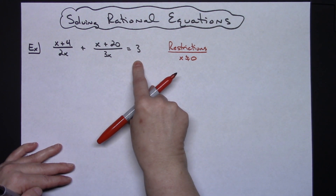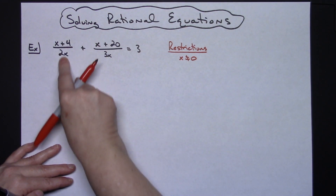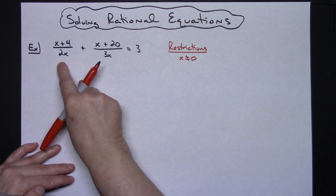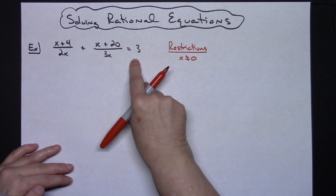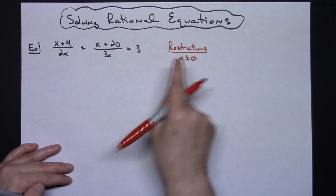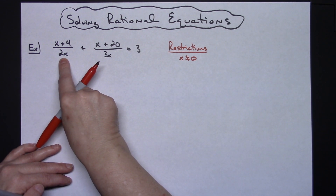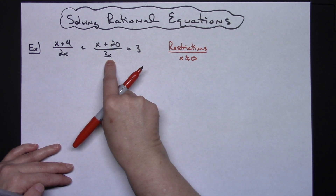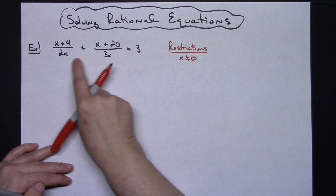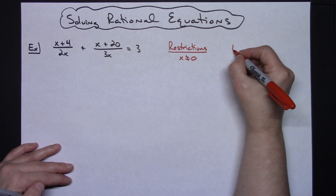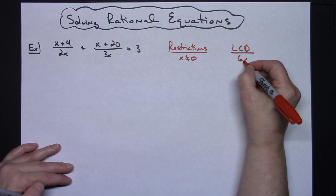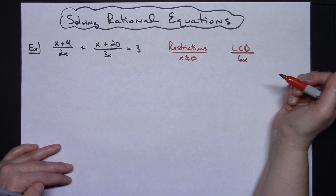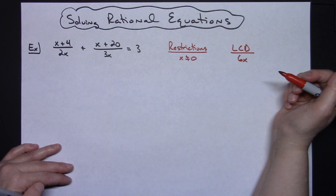Because this equation has fractions or rational expressions, I don't want to solve an equation that has fractions in it. So I'm going to find the least common denominator and multiply through by that to get rid of the fractions. Looking at 2x and 3x, the least common denominator is going to be 6x. So I'm going to multiply through by 6x to eliminate all of my fractions.